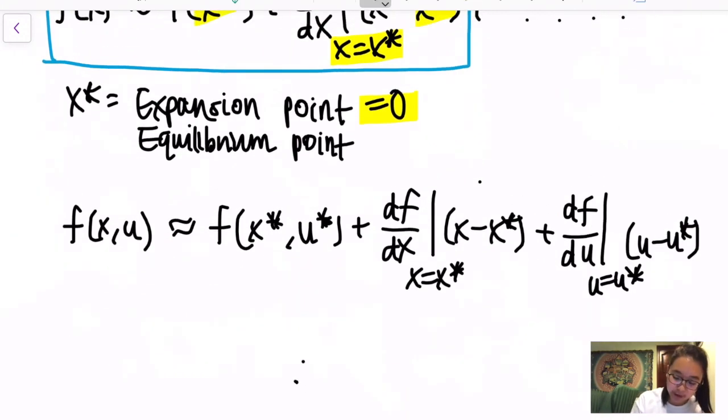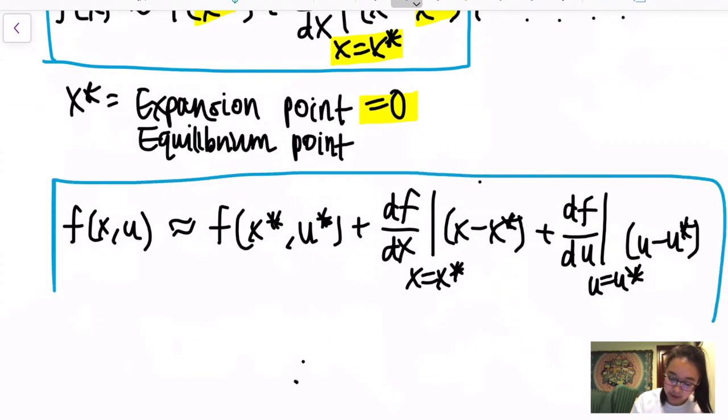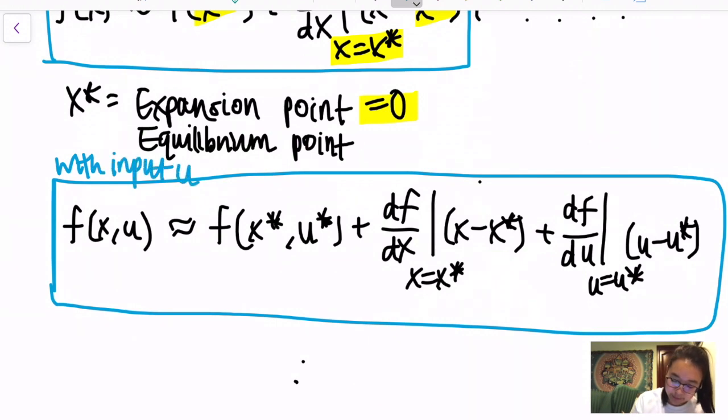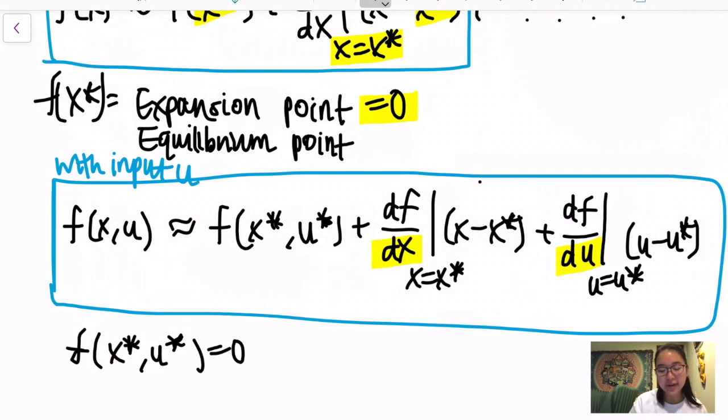This is more of the main format that we would be using since it also includes the input u. Something to keep in mind is that now we are taking the derivative twice, the first time with respect to x while the second time with respect to u. Similarly, we still have our equilibrium point. So instead of having f(x*) equal to zero, we now want our f(x*,u*) to be equal to zero.